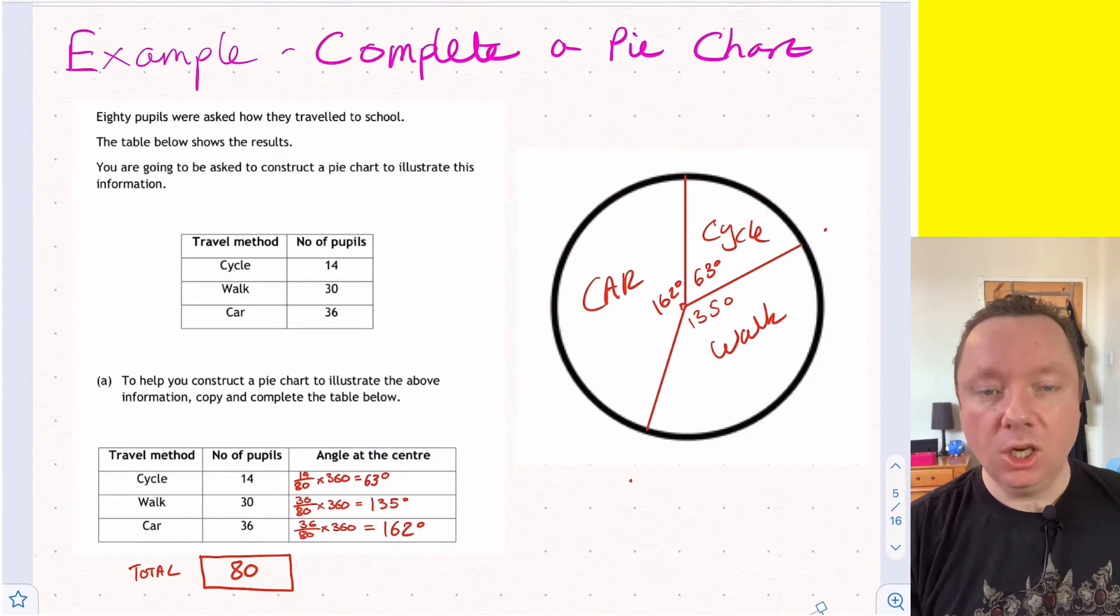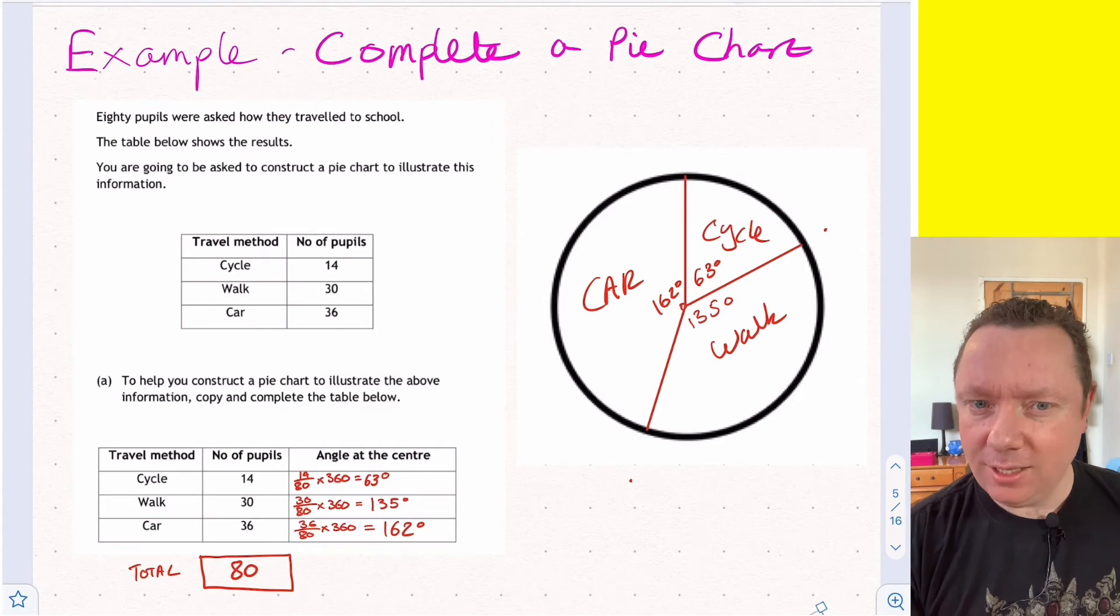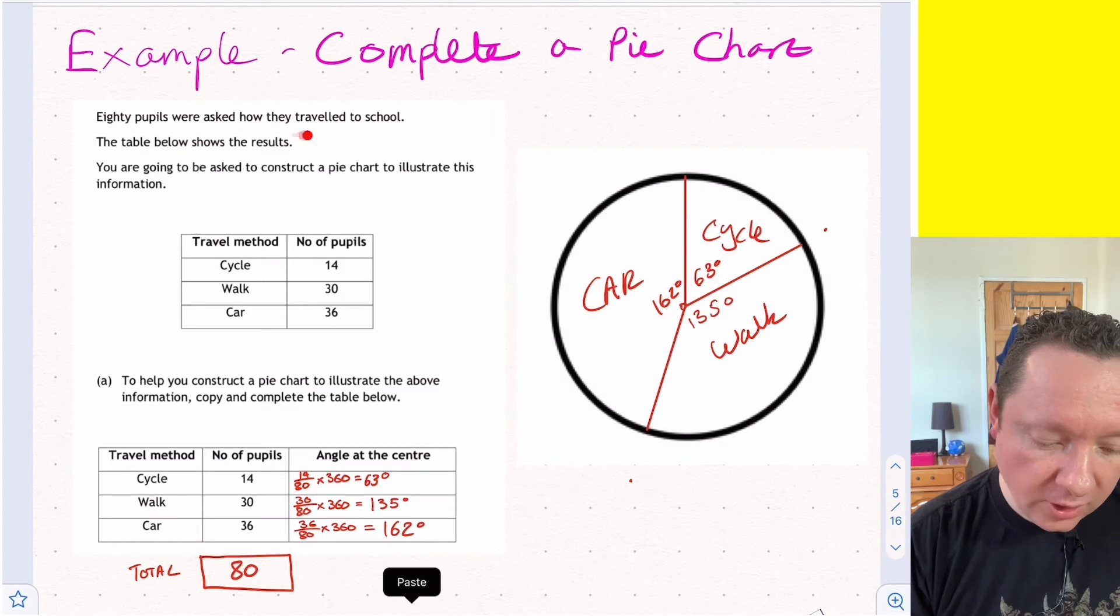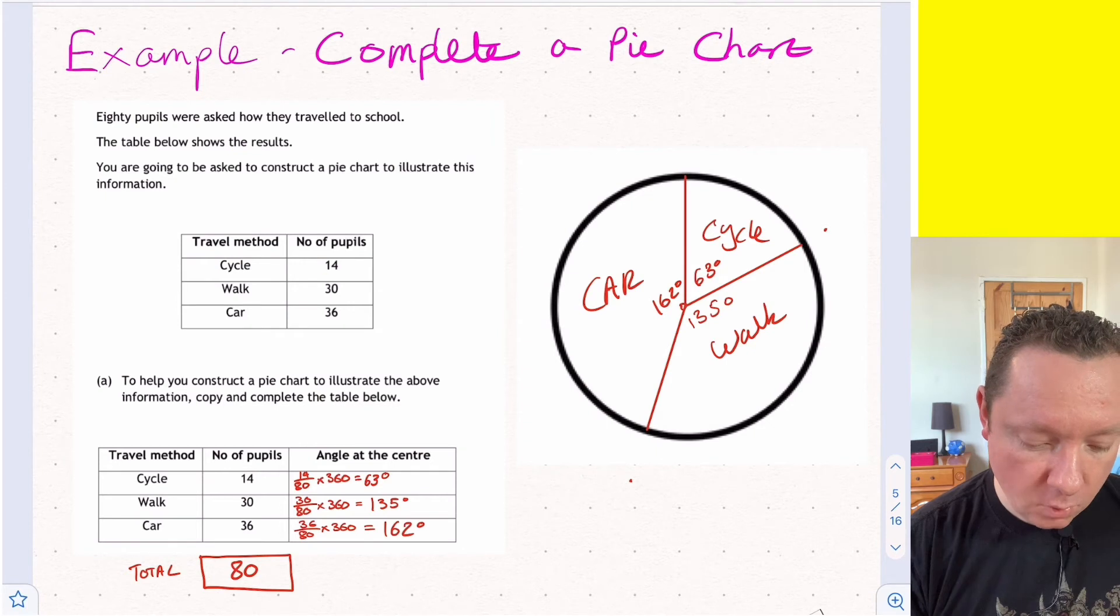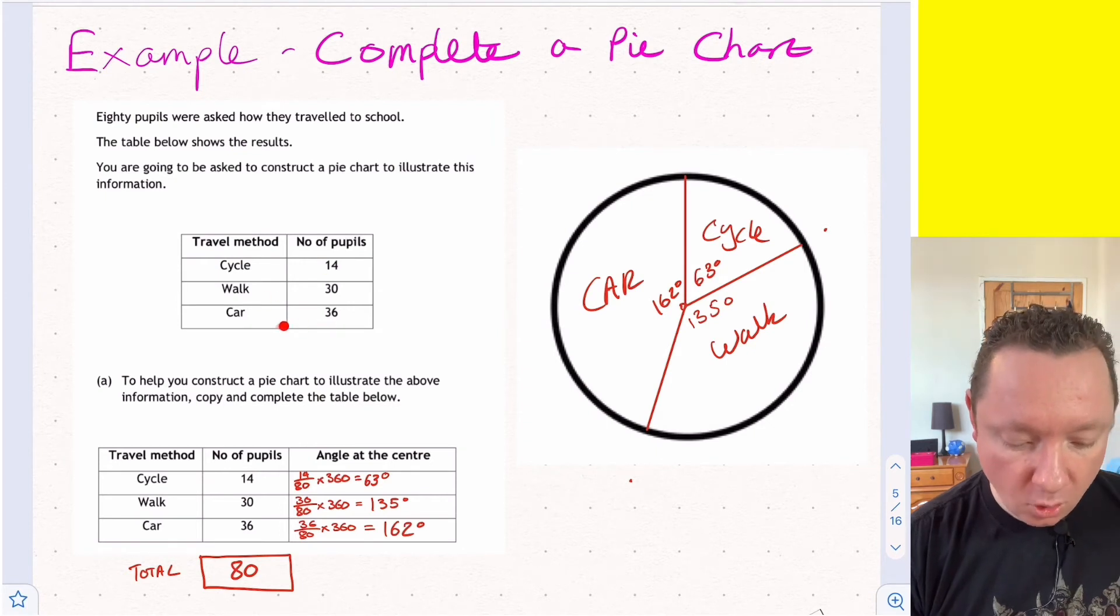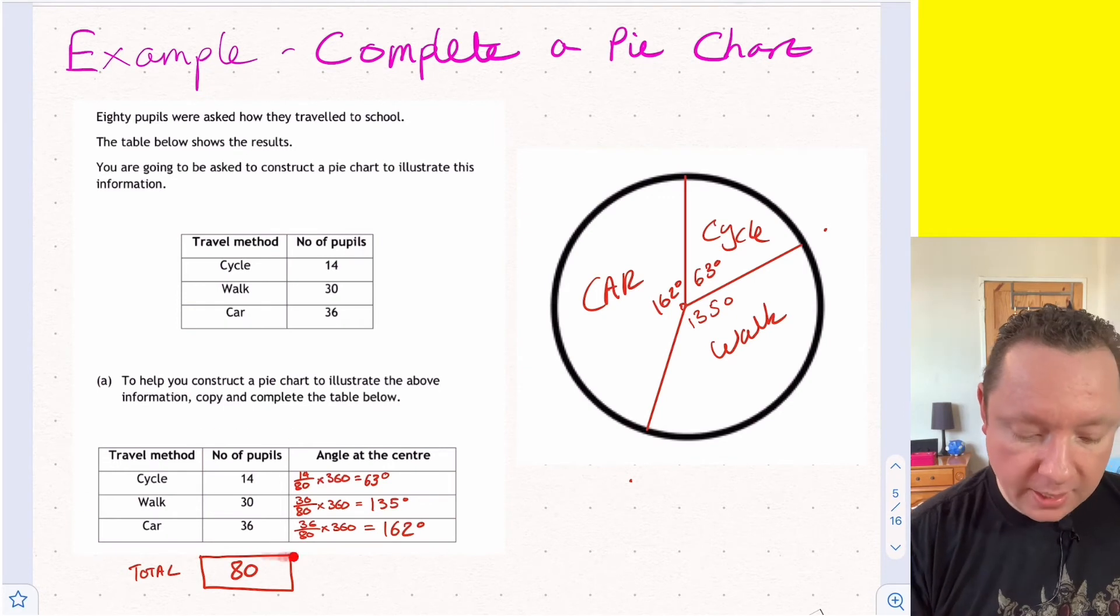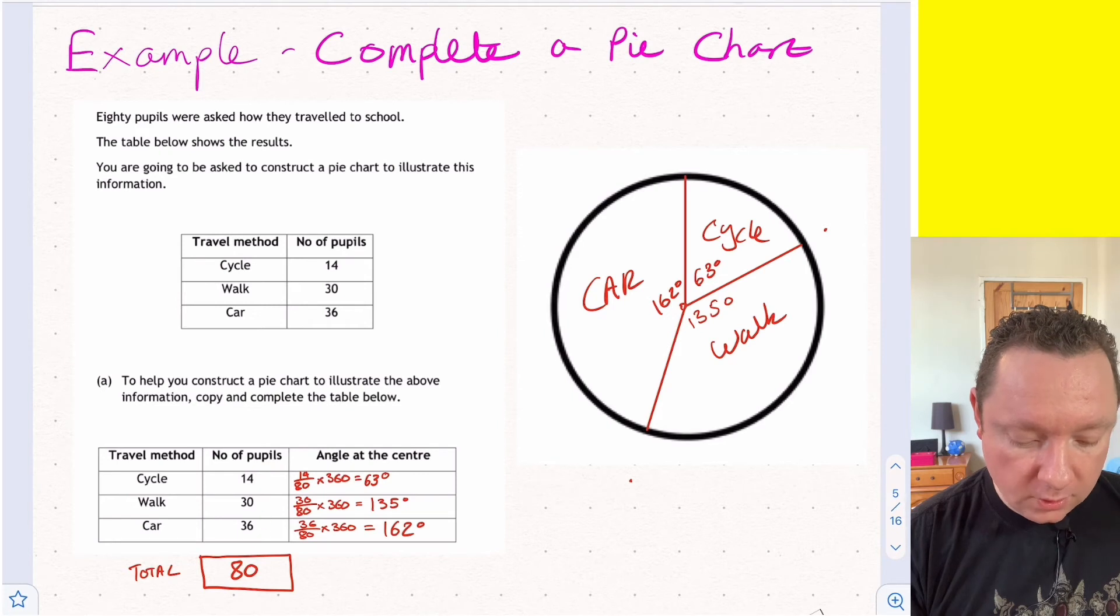Example: completing a pie chart can feel complicated, but it isn't really if you understand what's happening. So let's look at an example. Eight pupils were asked how they travelled to school. We had 14 cycled, 30 walked, and 36 got the car. And here's a little table to help us make a pie chart. If I add up all the total numbers of pupils, I get 80. 36 plus 30 plus 14 is 80.